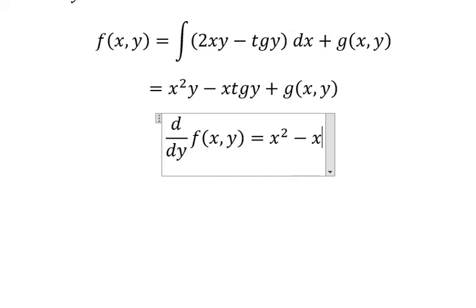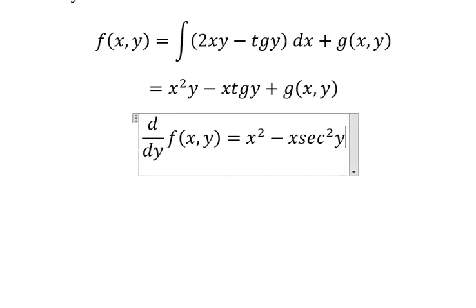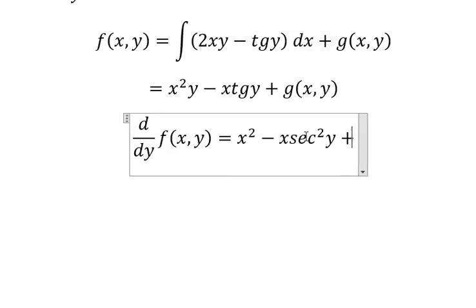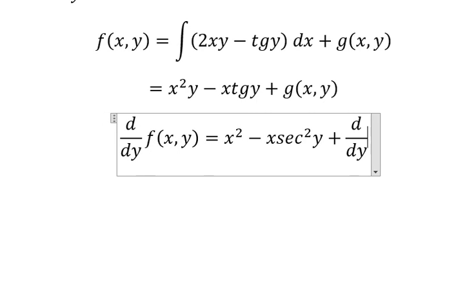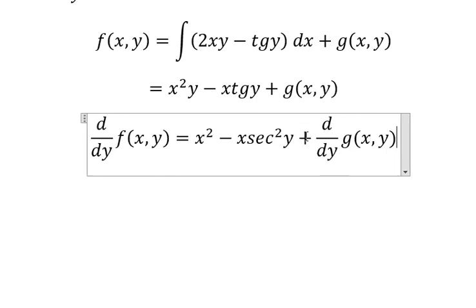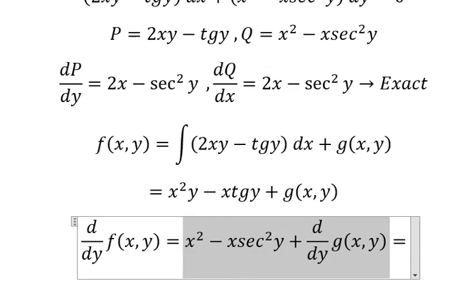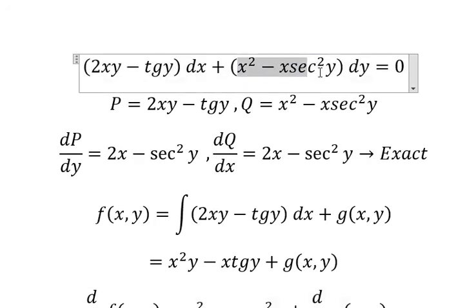We have secant of Y squared, and we have d over dY of G(x,y). And we know that this one is equal to this one.